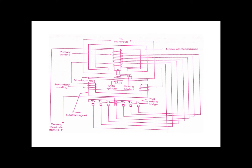The spindle of the disc carries moving contacts. When the disc rotates, the moving contacts come in contact with the fixed contacts, which are the terminals of the trip circuit. These are the fixed contacts — you can see two trip circuit terminals here.